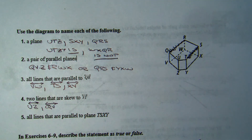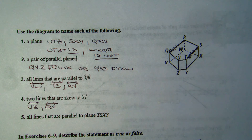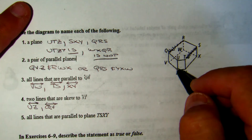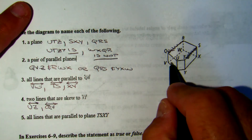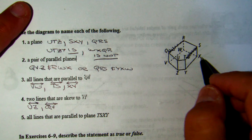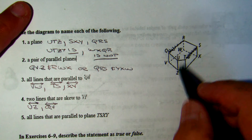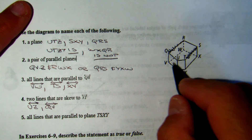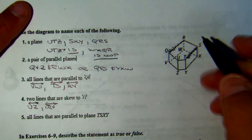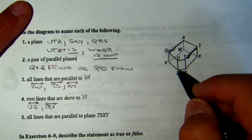A pair of parallel planes: in this diagram you're looking for planes that are opposite each other. So QVZ is the front; the back is RWX. You can add U or S if you want. QRS is the top; YXW is the bottom.